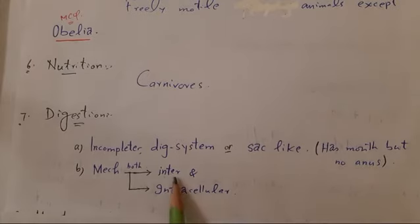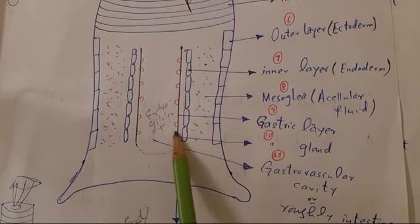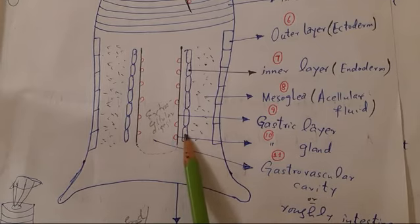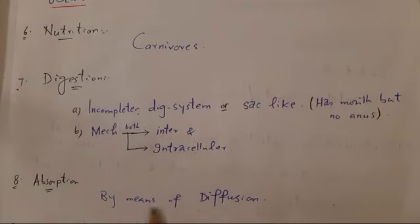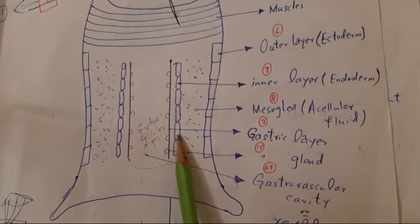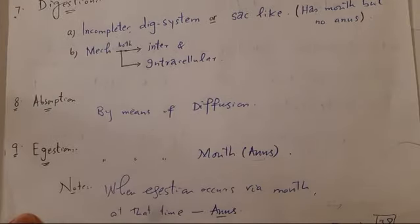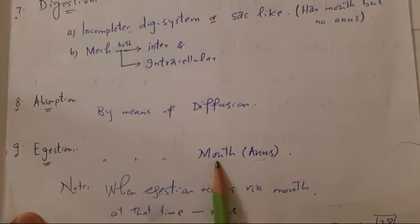They have both types of digestion: extracellular digestion, which occurs in the gastro-vascular cavity outside the cells, and intracellular digestion, which occurs in the endodermal cells. Absorption: the digested food is absorbed into the cells of the endoderm by means of diffusion and then into the ectoderm as well. Egestion occurs by means of the mouth — at that time the mouth acts as anus — and the remaining undigested food is removed through the mouth.